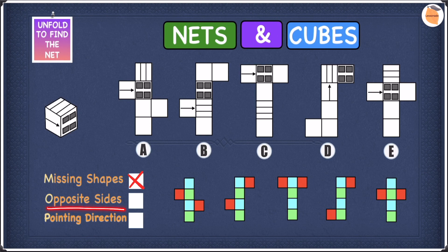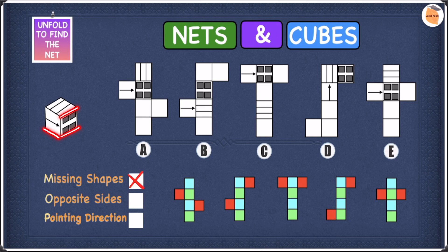Let's move into opposite sides. Looking at the cube, all three shapes are next to each other. Since these shapes are next to each other, none of them are on opposite sides — because if a shape is on opposite sides it will never be next to each other. So according to the opposite sides rule, opposite sides can never be next to each other. These shapes are next to each other, which means they're not opposite.